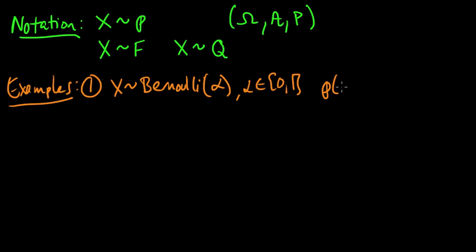So the PMF in this case is P of 1 is alpha, P of 0 is 1 minus alpha. So X takes the value 0 or 1. It's a Bernoulli random variable.